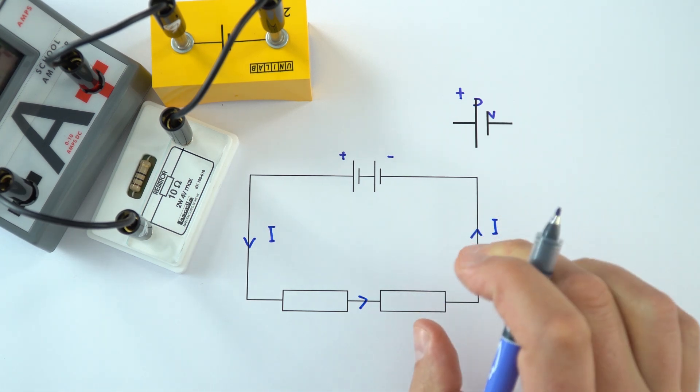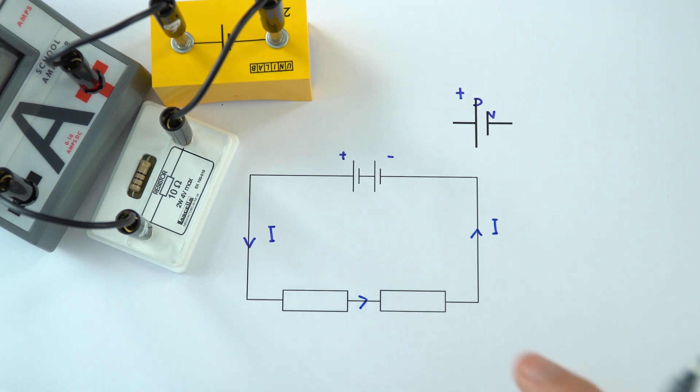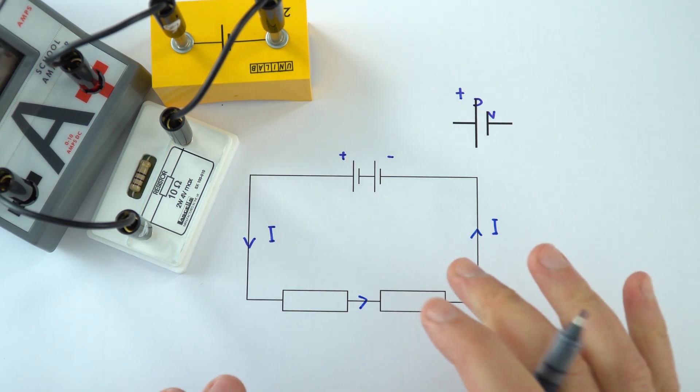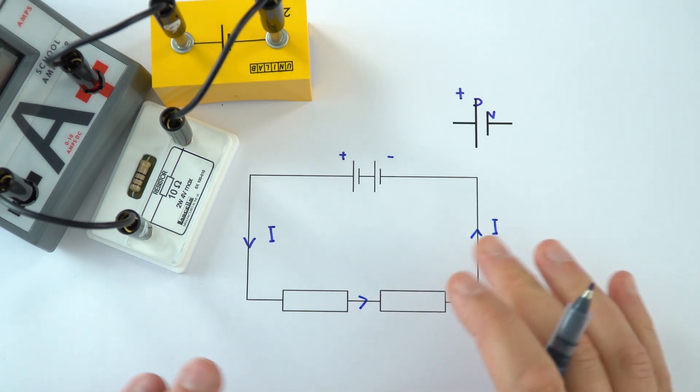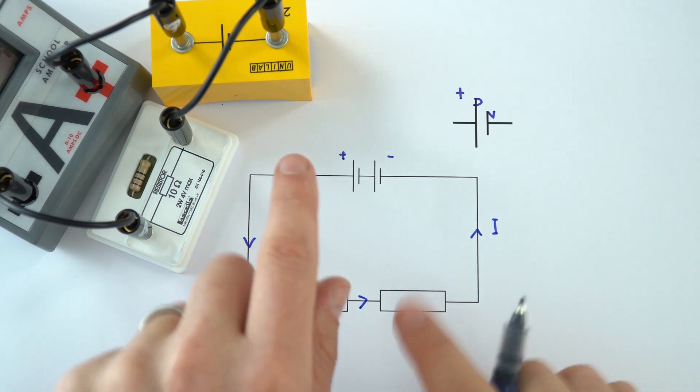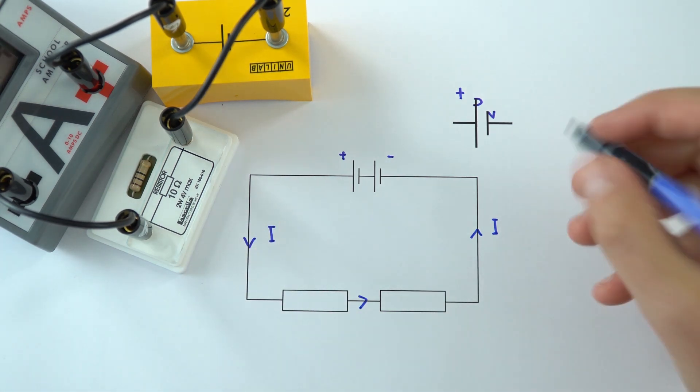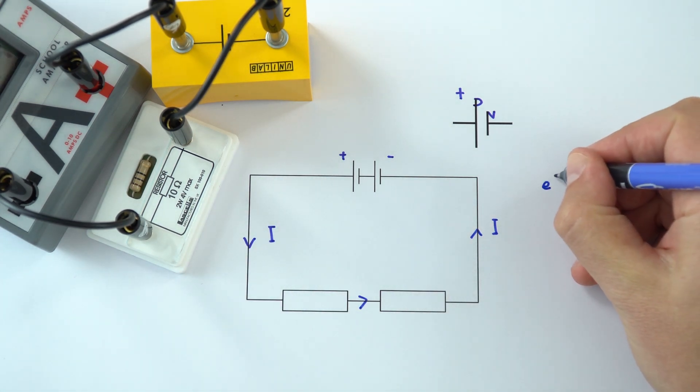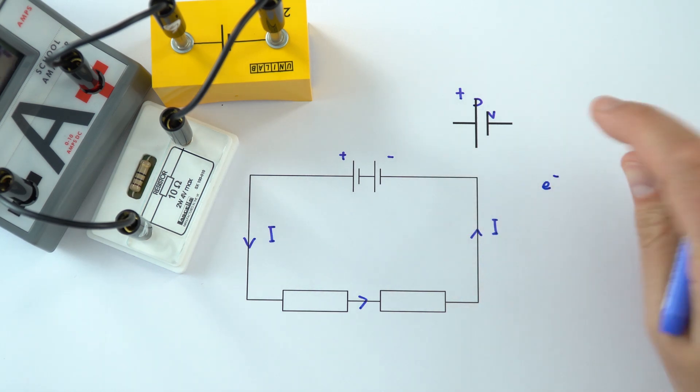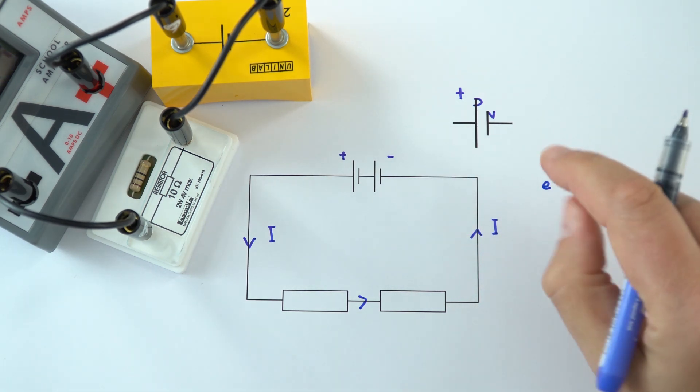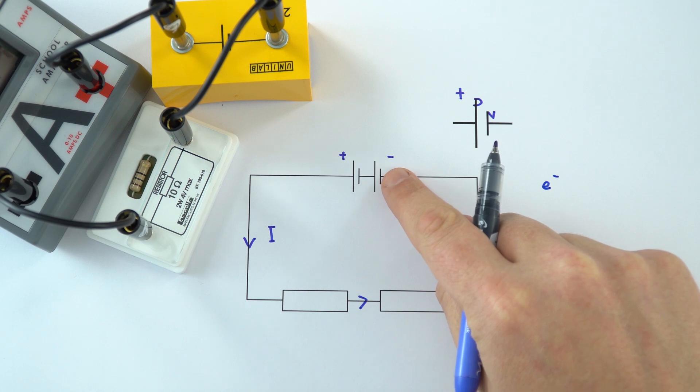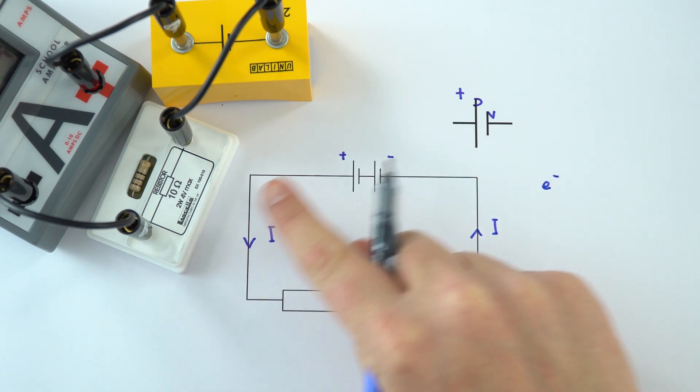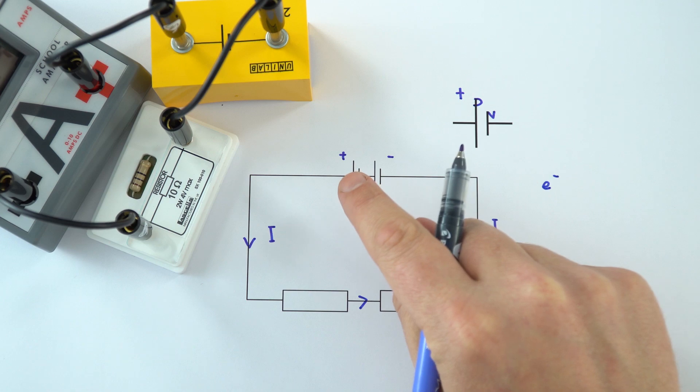However, even though this is what we say is going from positive to negative, the actual electrons, and actually these were discovered later than after we already had some electric circuits and we'd already named which was positive and the negative terminal, we actually found out that the electrons, which are the charged particles moving in normal circuits, these have a negative charge. And that means that they're going to be going from the negative end, and they're going to be attracted towards the positive end of that cell or the battery.